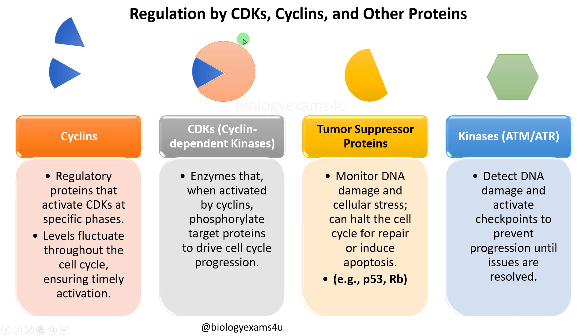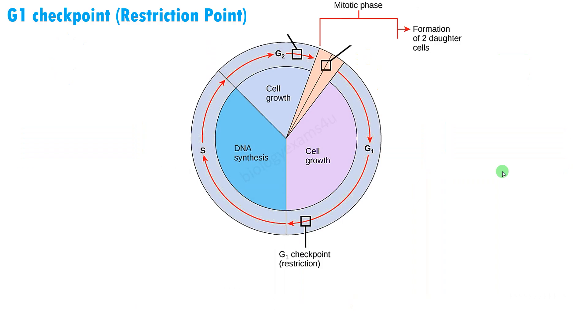So the first two — cyclins and CDKs — help in progressing from one stage to the other, whereas tumor suppressor proteins and kinases are regulatory proteins that halt the cell cycle.